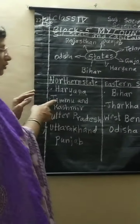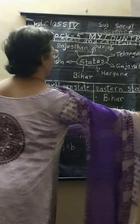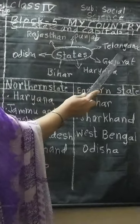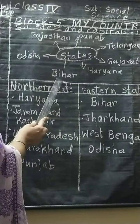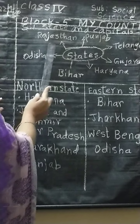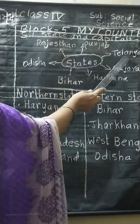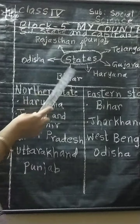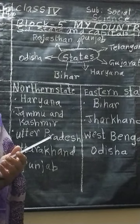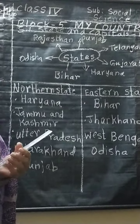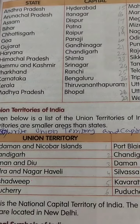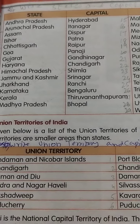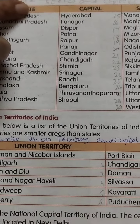Come on. Now look on the blackboard. Some states like Punjab, Telangana, Gujarat, Haryana, Bihar, Odisha, Rajasthan — I think you must be belonging to these states. Many children used to come here and study here also. Now, children, open your reader, Block 5, page number 35. At the top you can see: State and Capital.